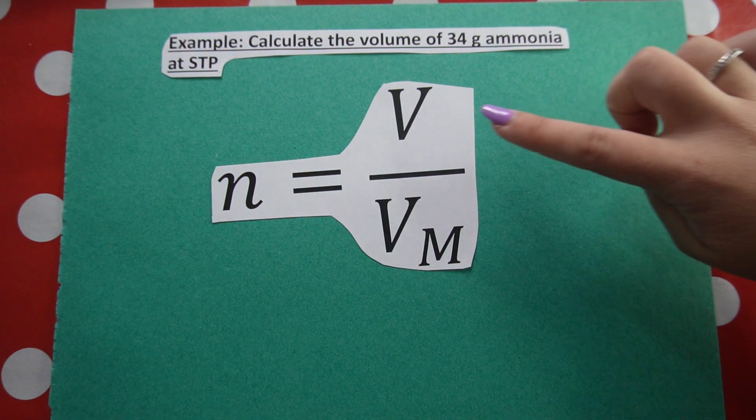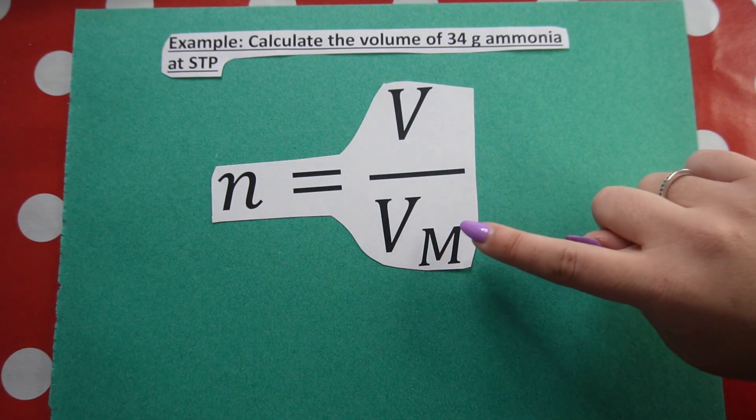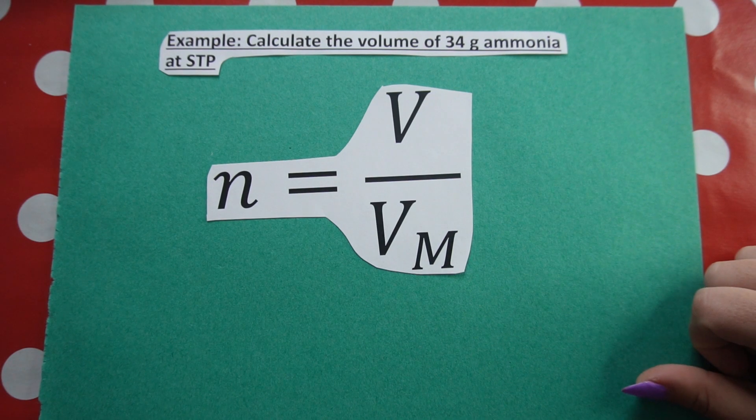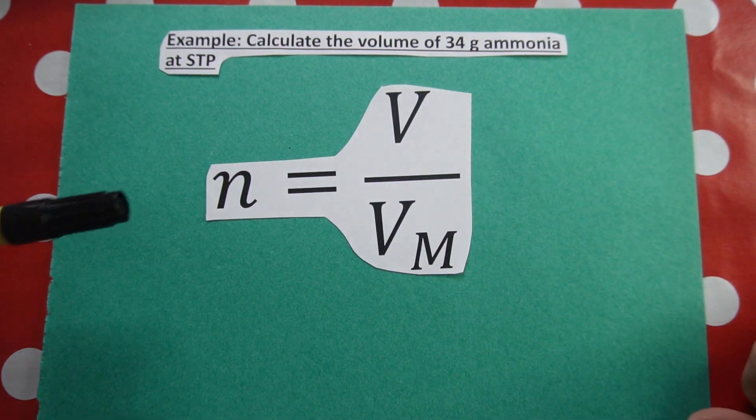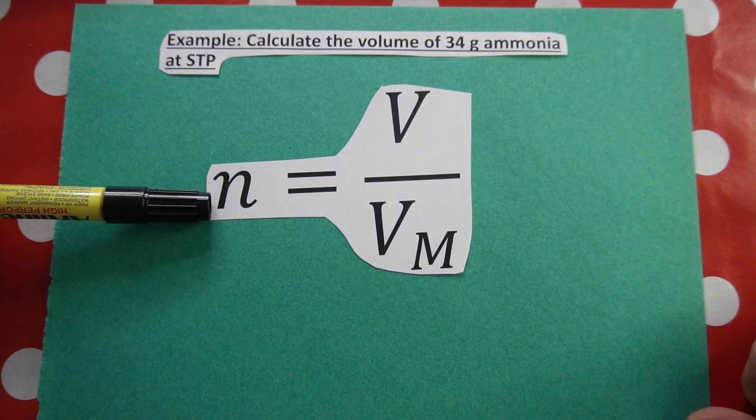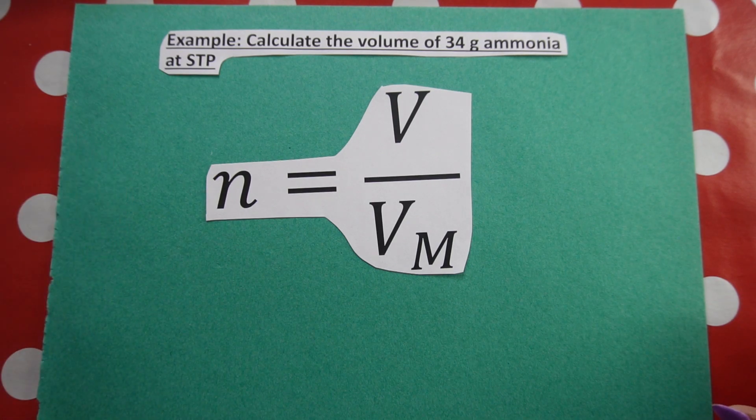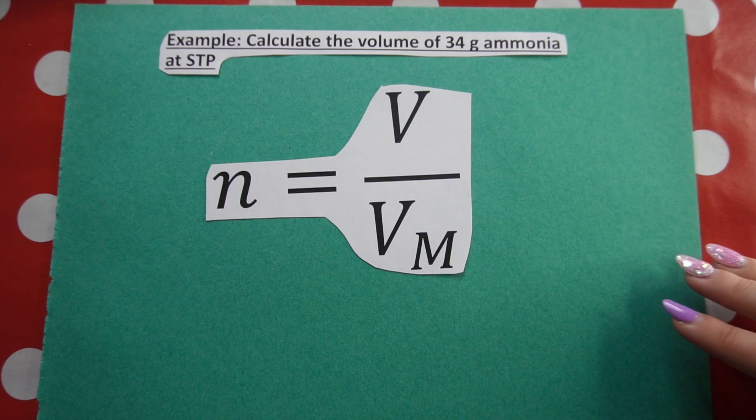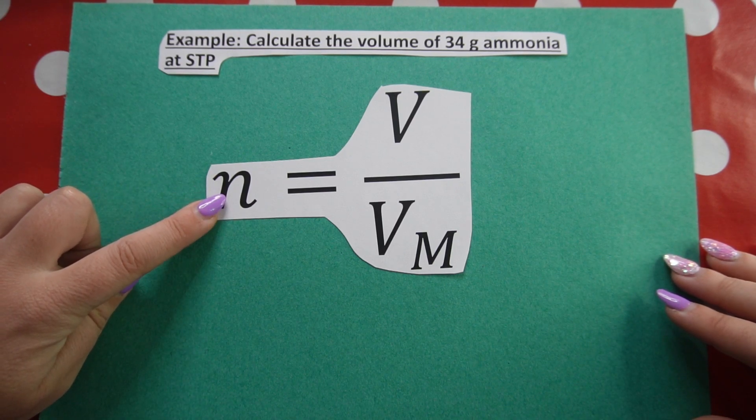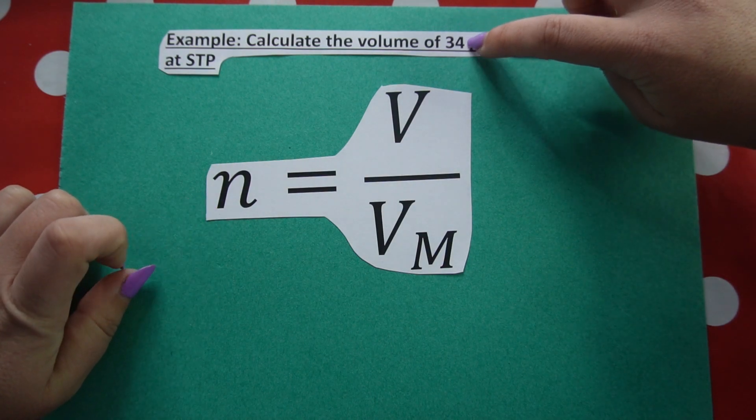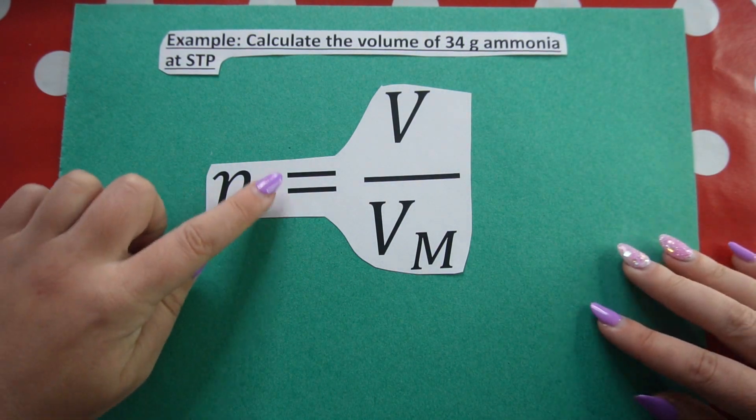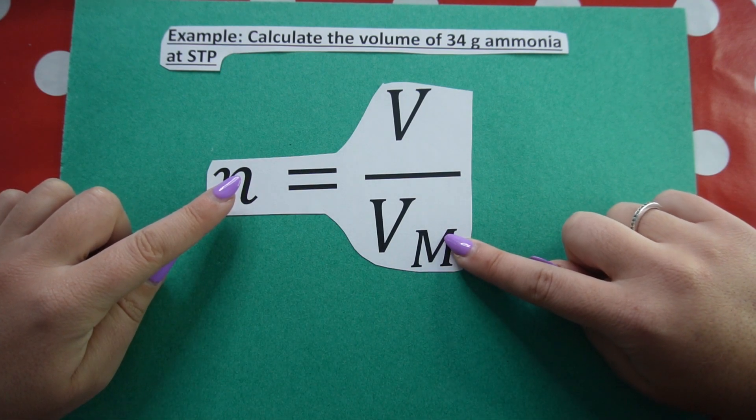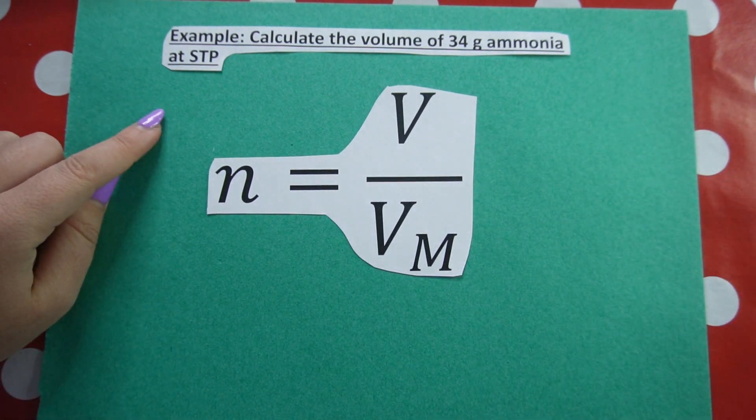However, in this formula, if I want to calculate volume, volume is my unknown. I know molar volume is 22.4 because it's at STP. But how can I calculate volume if I do not know my number of moles yet? So we need to pause using this formula and use the other given information to first work out number of moles, 34 grams. I'm going to convert grams to moles. Then once I have number of moles, I can multiply that by my molar volume to get my volume of ammonia at STP.